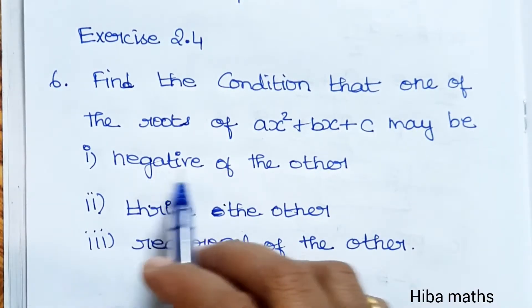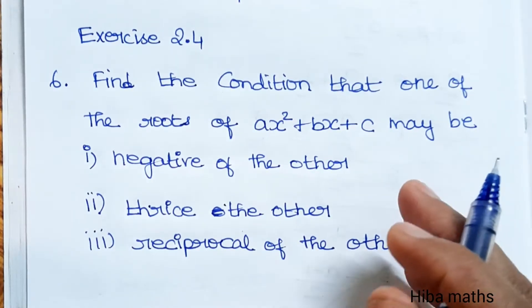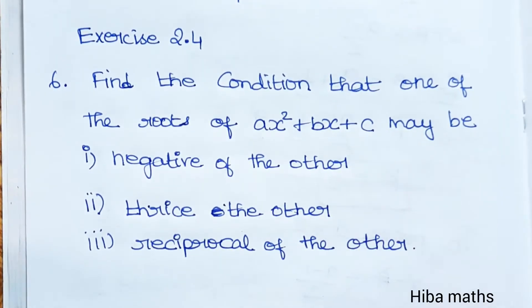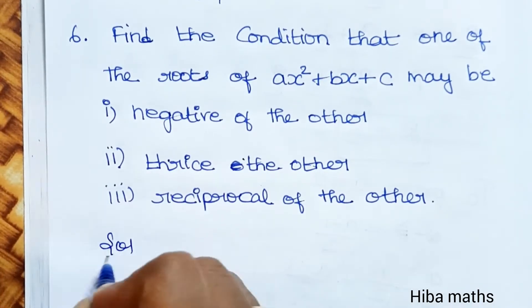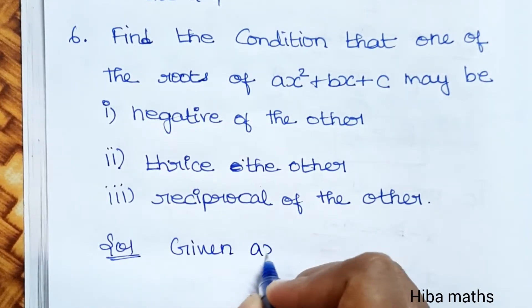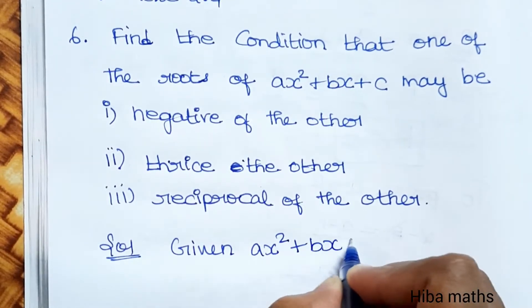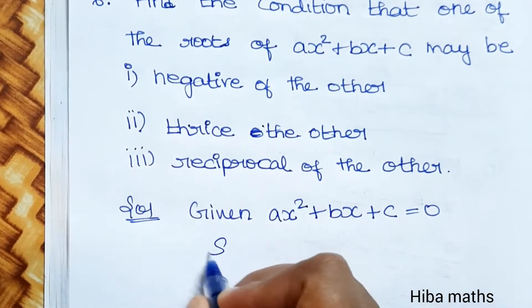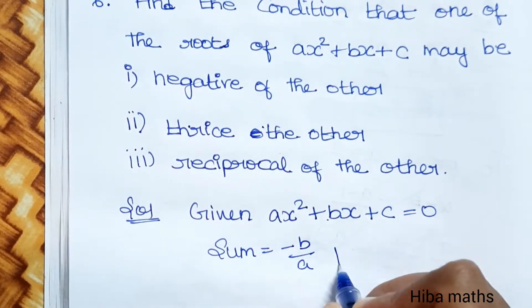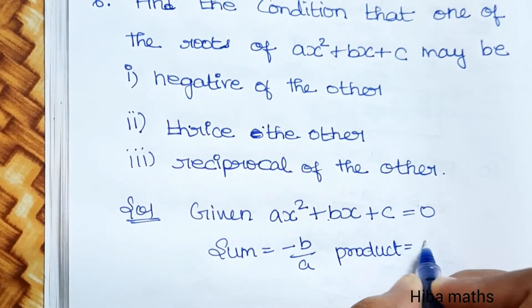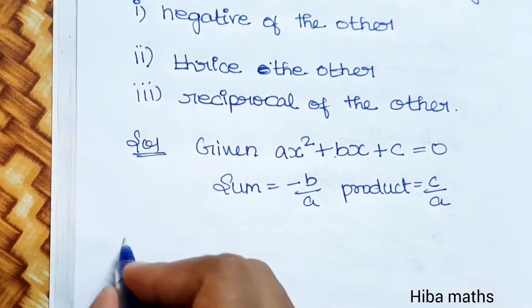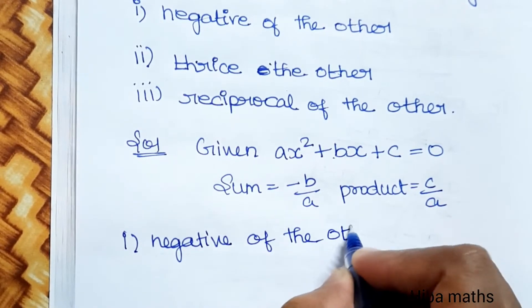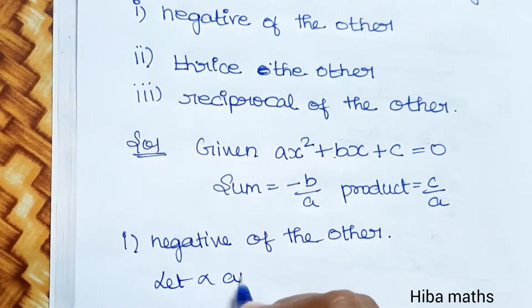For the quadratic equation AX² + BX + C = 0, we use the general formulas: sum of the roots = -B/A, and product of the roots = C/A. These will be applied to each sub-case.